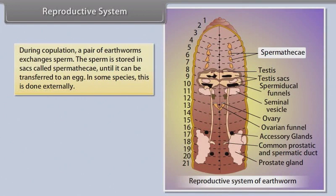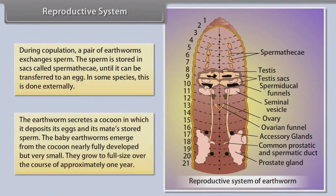Until sperm can be transferred to an egg, in some species this is done externally. The earthworm secretes a cocoon in which it deposits its eggs and its mate's stored sperm. The baby earthworms emerge from the cocoon nearly fully developed but very small, and grow to full size over approximately one year.